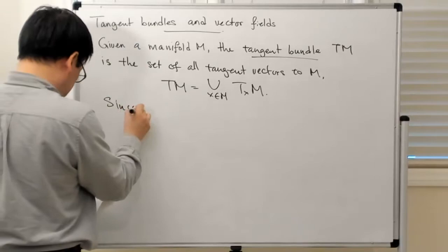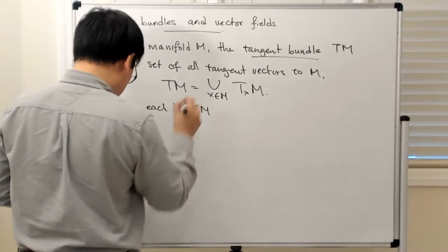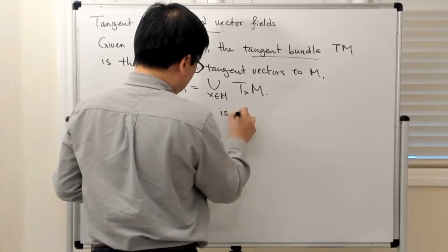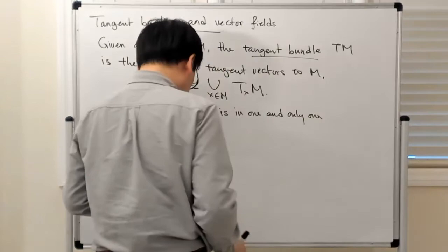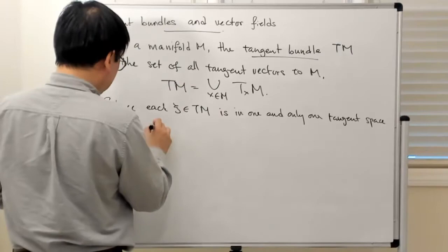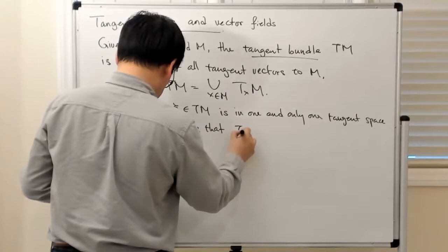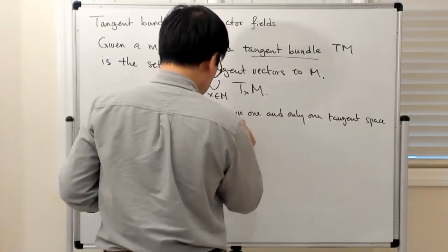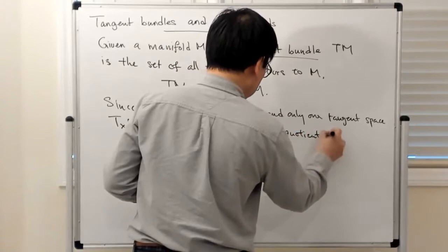Since each tangent vector in the tangent bundle is in one and only one tangent space TxM, it follows that M is a quotient of TM with a natural projection.